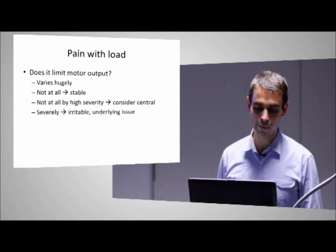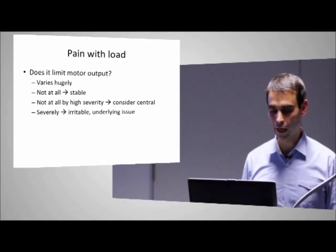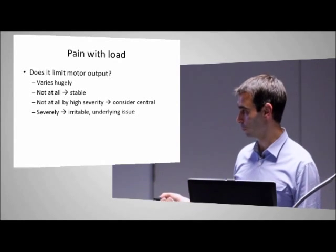On the other end of the spectrum, some people are severely affected in terms of motor output associated with pain. These people are often irritable with an underlying tissue component — though not always, as central drivers can also be at play. The key point is that we know we need to offload these people: we can't get them doing hopping or activities that cause huge issues in motor output.